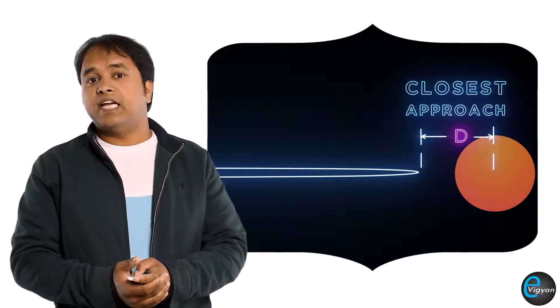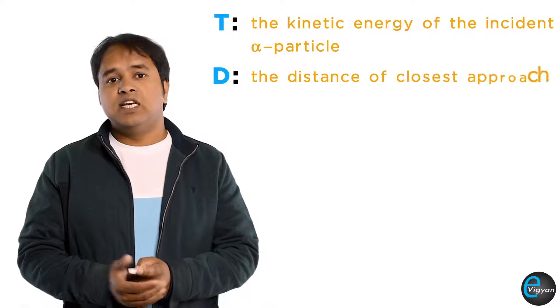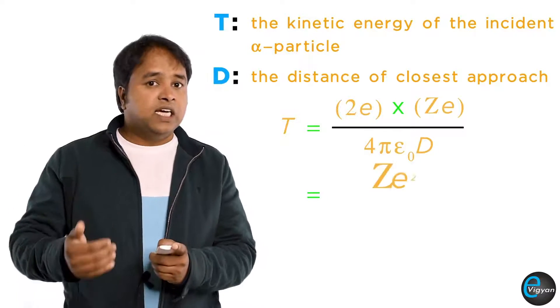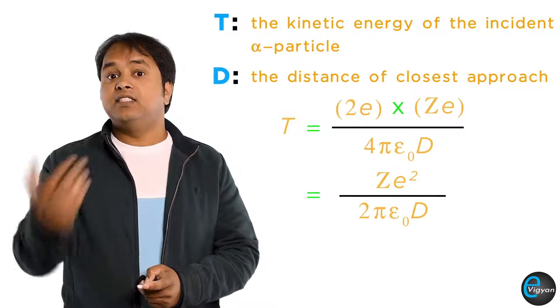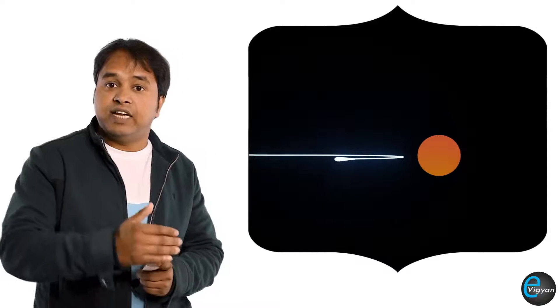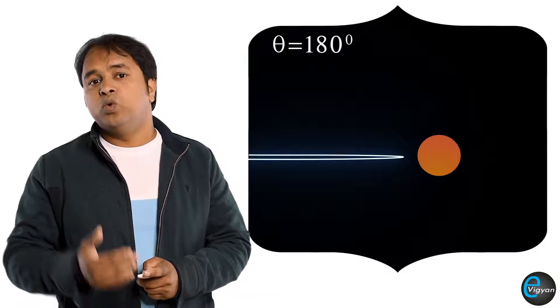For those alpha particles directed towards the center of the nucleus, the collision is considered a head-on collision. Hence the kinetic energy of the incident alpha particle equals the Coulomb energy at the closest approach. If T is the kinetic energy of the incident alpha particle and d is the distance of closest approach, then T = 2e · Ze / (4πε₀d) = Ze² / (2πε₀d), giving d = Ze² / (2πε₀T). Alpha particles directed toward the center of the nucleus are reflected back by 180°, so the scattering angle θ = 180°.